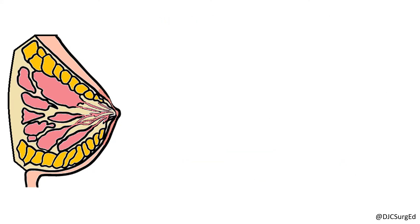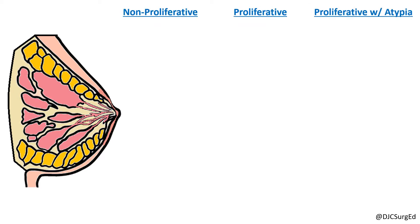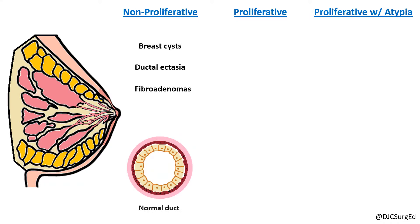Breast lesions are classified as non-proliferative, proliferative, or proliferative with atypia. Non-proliferative lesions include breast cysts, ductal ectasia, and fibroadenomas and carry no increased risk of breast cancer.